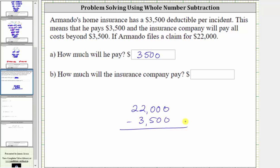Now let's find this difference. We begin by subtracting in the ones place value. Zero minus zero is zero.